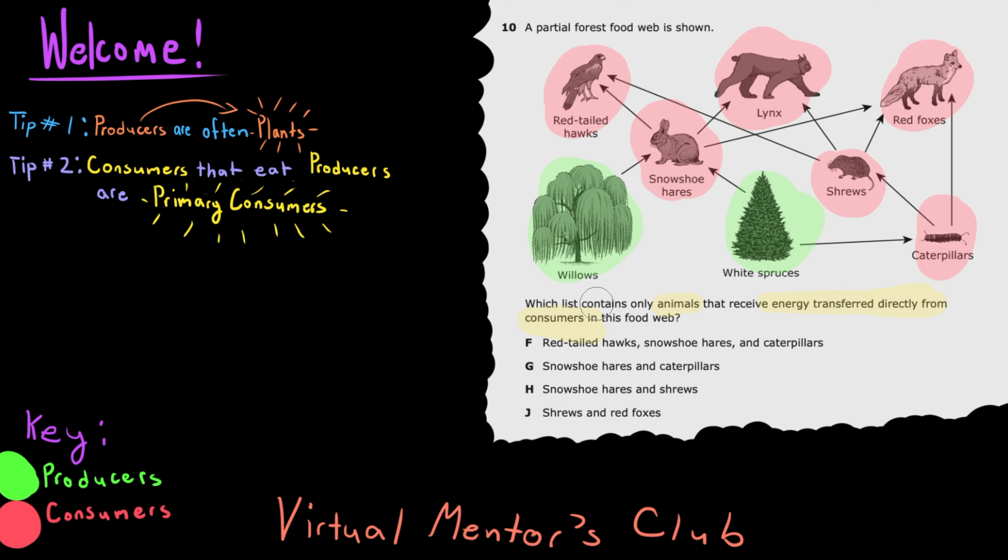So while you could just identify all the animals that fit the description of only eating consumers, at this point it's a lot easier to just eliminate the primary consumers, which are the only animals that don't eat other consumers, but they eat producers instead.